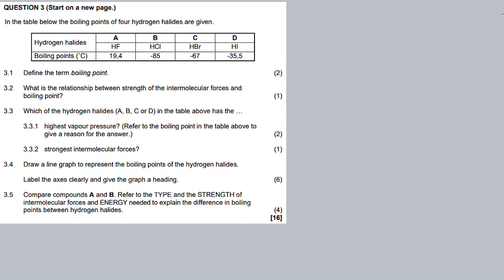Question three: in the table below, the boiling points of four hydrogen halides are given. The hydrogen halides are A, B, C, and D. Looking at the boiling points, the highest belongs to A, the lowest belongs to B. Then question 3.1: what is defined as the term boiling point?